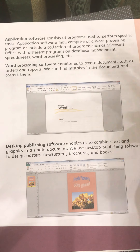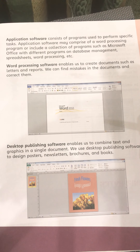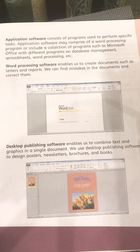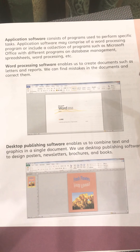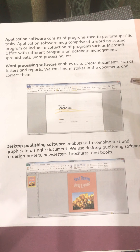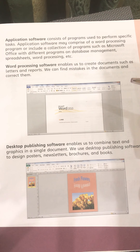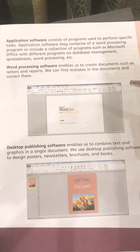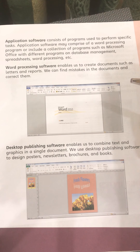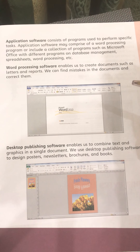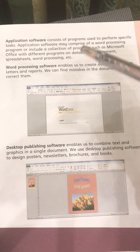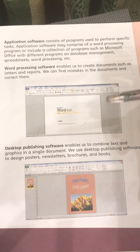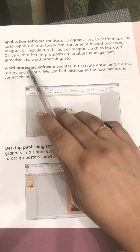You might have seen that your fathers mostly do their office work on Microsoft Excel. Microsoft Excel is an application software. Microsoft Word and Microsoft PowerPoint — all of the Microsoft Office suite and database management — are part of application software. With the help of application software we can complete different tasks. With Microsoft Excel we can do calculations and make bar graphs, charts, and pie graphs. With Microsoft Word we can type data and write essays or books. With Microsoft PowerPoint we can make presentations.